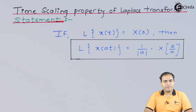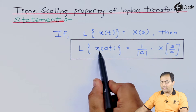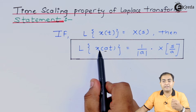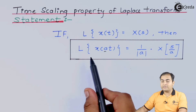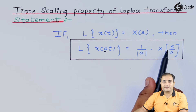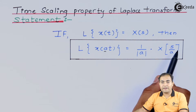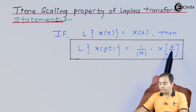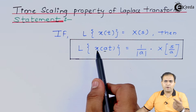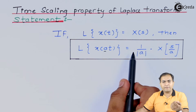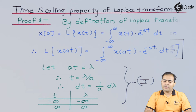Let's prove the time scaling property of the Laplace transform. The statement is: the Laplace transform of x(at), where 'a' is the time scaling factor alpha, equals (1/|a|) * X(s/a). So if alpha is multiplied in the time domain, we divide by 'a' in the result. I have placed mod of 'a' because 'a' can be positive or negative.